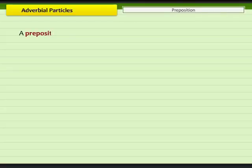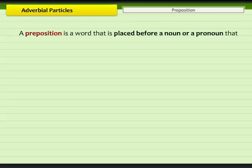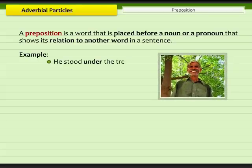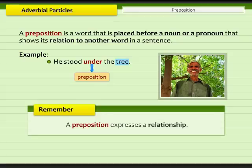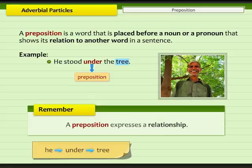A preposition is a word that is placed before a noun or a pronoun that shows its relation to another word in a sentence. For example, he stood under the tree. The preposition in this sentence is 'under.' It is placed before the noun 'tree.' We must remember that a preposition expresses a relationship. Thus, the preposition 'under' expresses a relationship between the pronoun 'he' and the noun 'tree.'